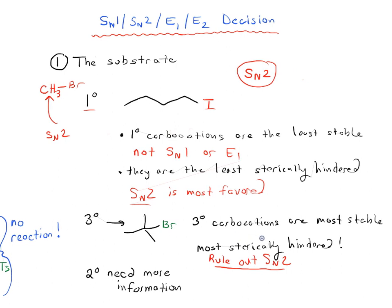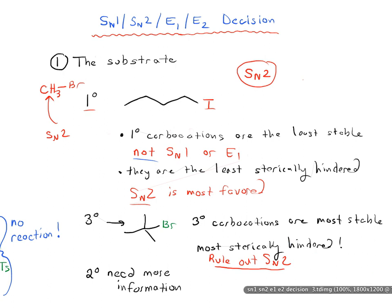To summarize: if it's primary, you can rule out SN1 and E1 — it's probably going to be SN2. If it's tertiary, you can certainly rule out SN2, and we may also need to rule out E2 in the next step. Let's look at a couple of examples to make this more concrete.